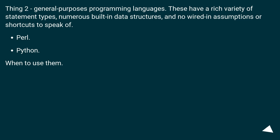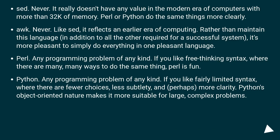Thing 2 — general-purpose programming languages. These have a rich variety of statement types, numerous built-in data structures, and no wired-in assumptions or shortcuts to speak of. When to use them: Sed — never. It really doesn't have any value in the modern era of computers with more than 32K of memory. Perl or Python do the same things more clearly. Awk — never. Like Sed, it reflects an earlier era of computing. Rather than maintain this language in addition to all the others required for a successful system, it's more pleasant to simply do everything in one pleasant language.